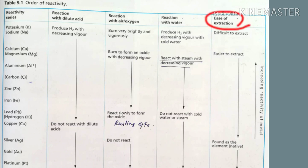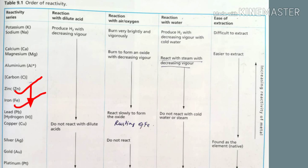And regarding the ease of extraction: it's difficult to extract sodium or potassium because they are highly reactive. The ones in the middle of the reactivity series are easier to extract. Those below carbon are extracted using carbon as a reducing agent — for example, zinc and iron are both extracted using carbon. The lower ones like gold and platinum are found in their elemental state.